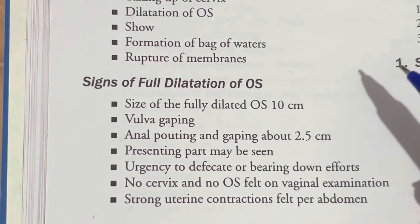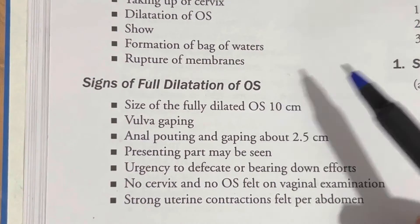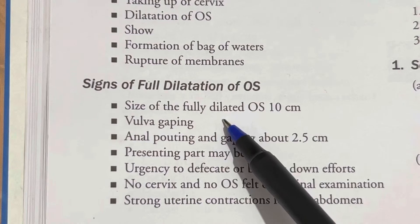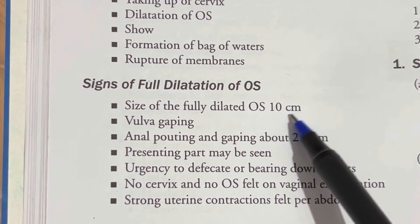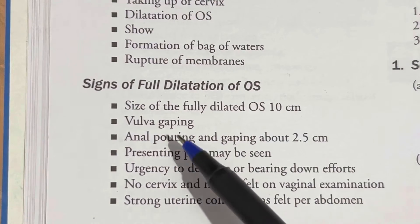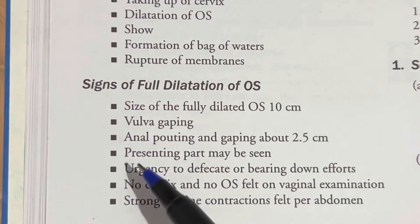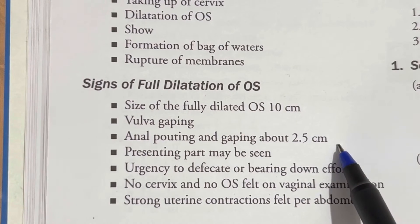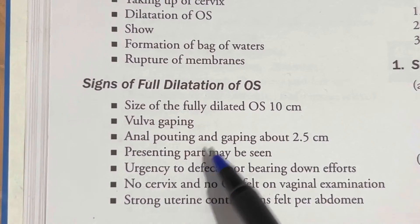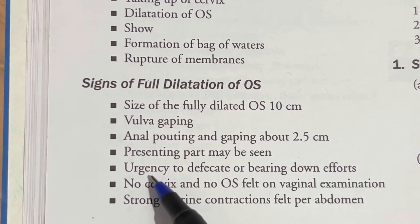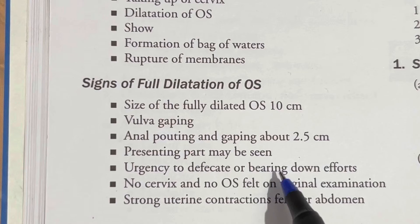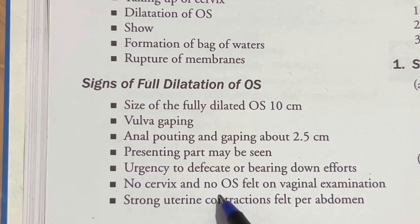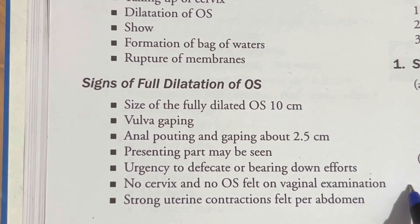Now, what are the signs seen at the time of full dilatation of the cervix or os? First, the size of the fully dilated os is about 10 centimeters. Next, vulva gapping and anal pouting — gapping about 2.5 centimeters. The presenting part may be seen. There is urgency to defecate or bearing-down efforts, and no cervix or os is felt on vaginal examination.